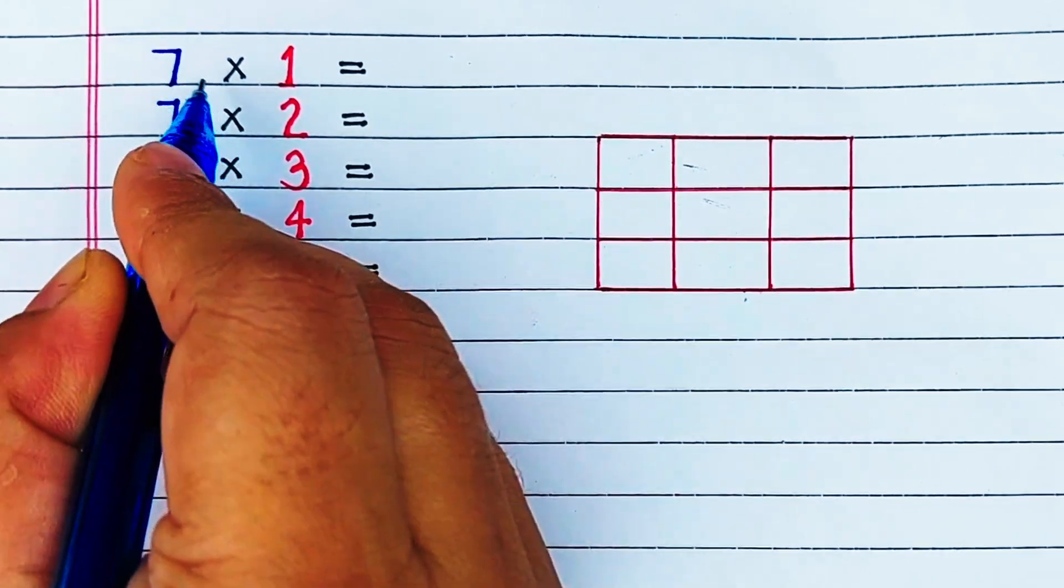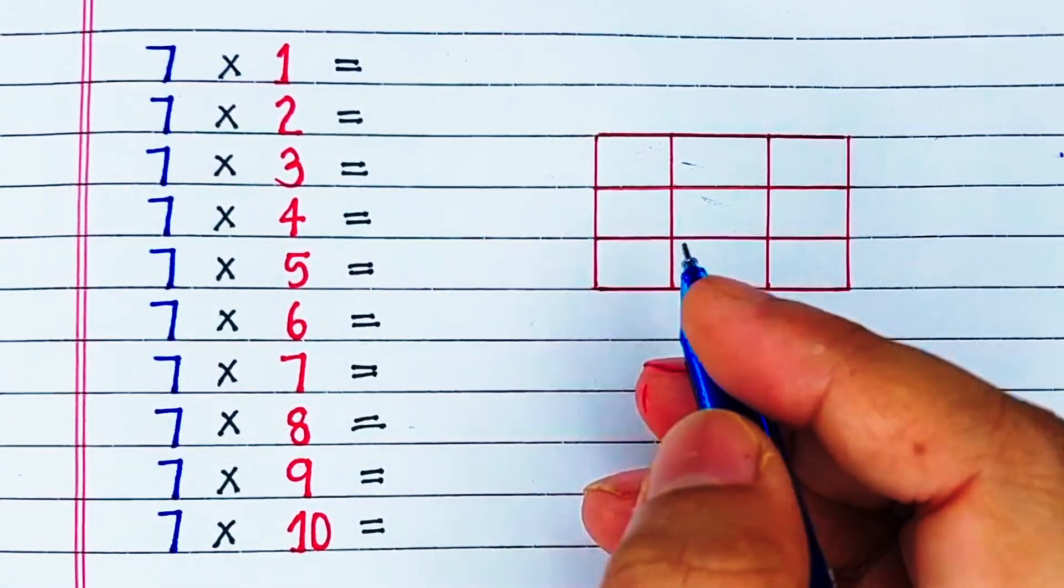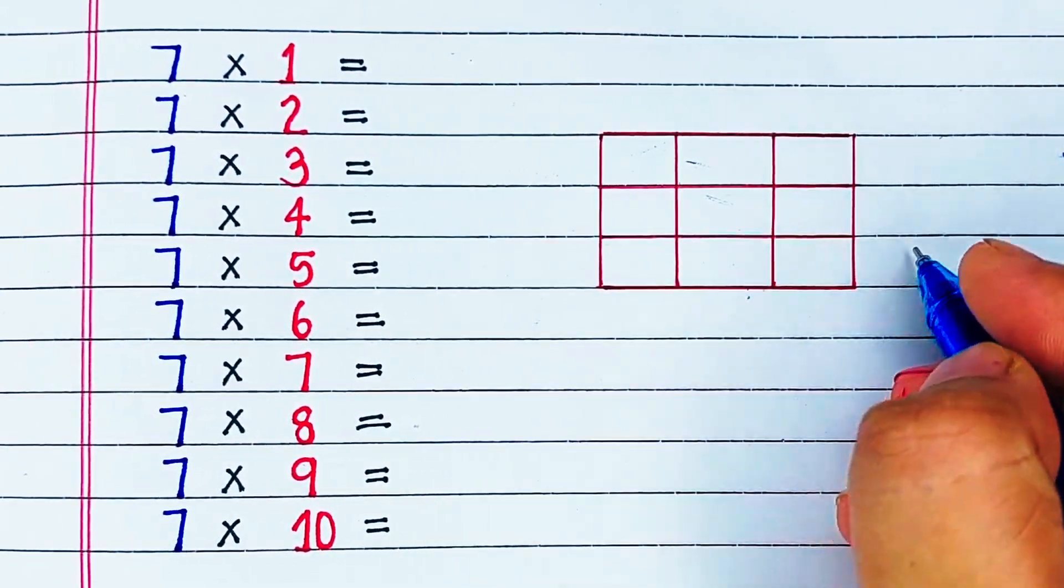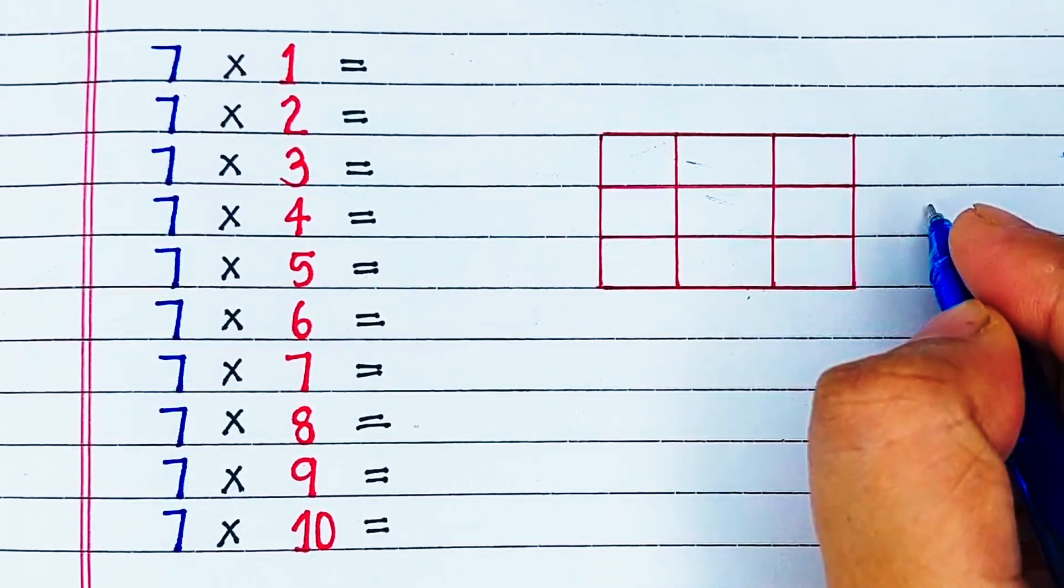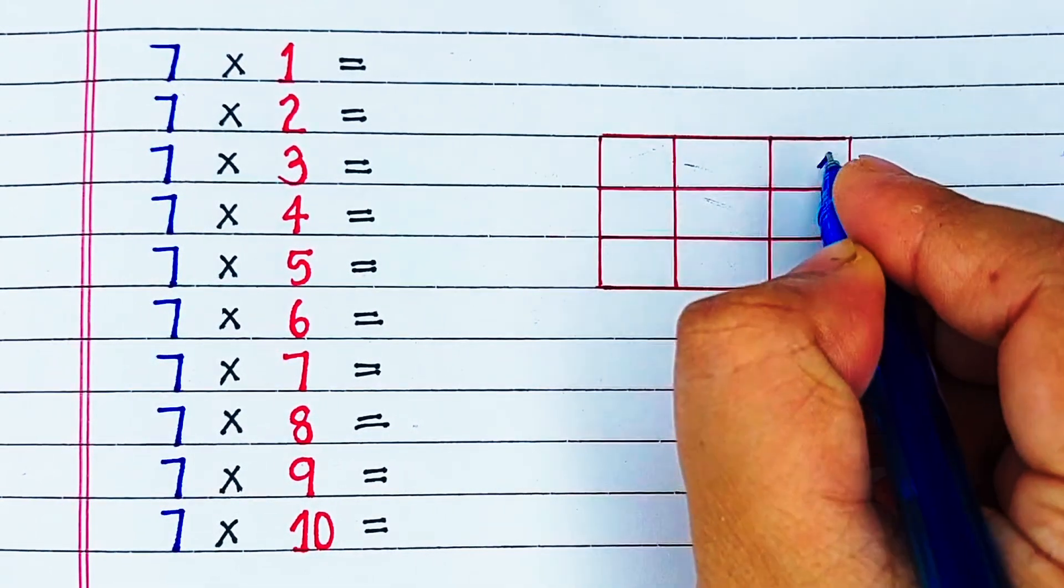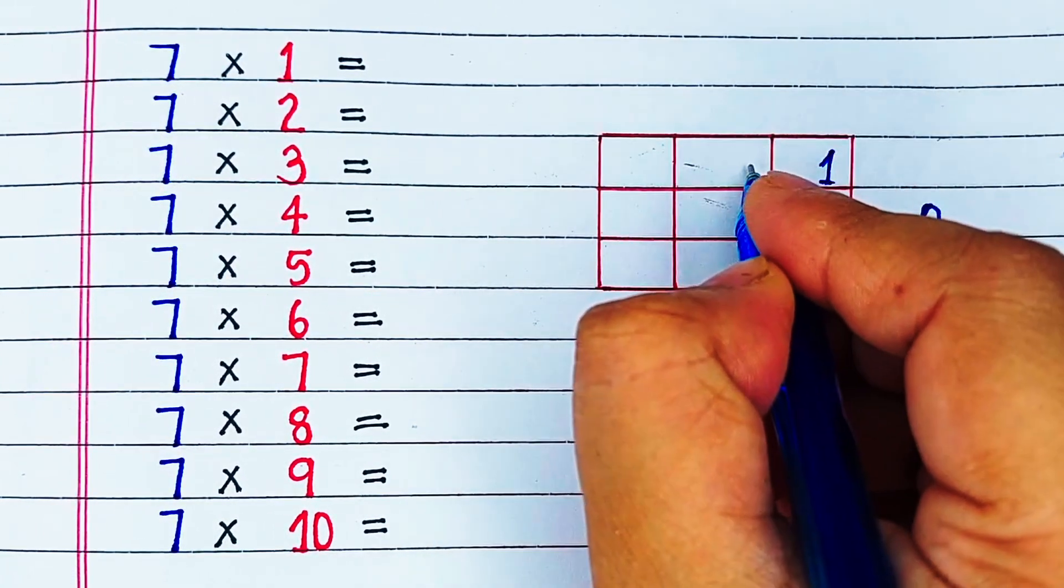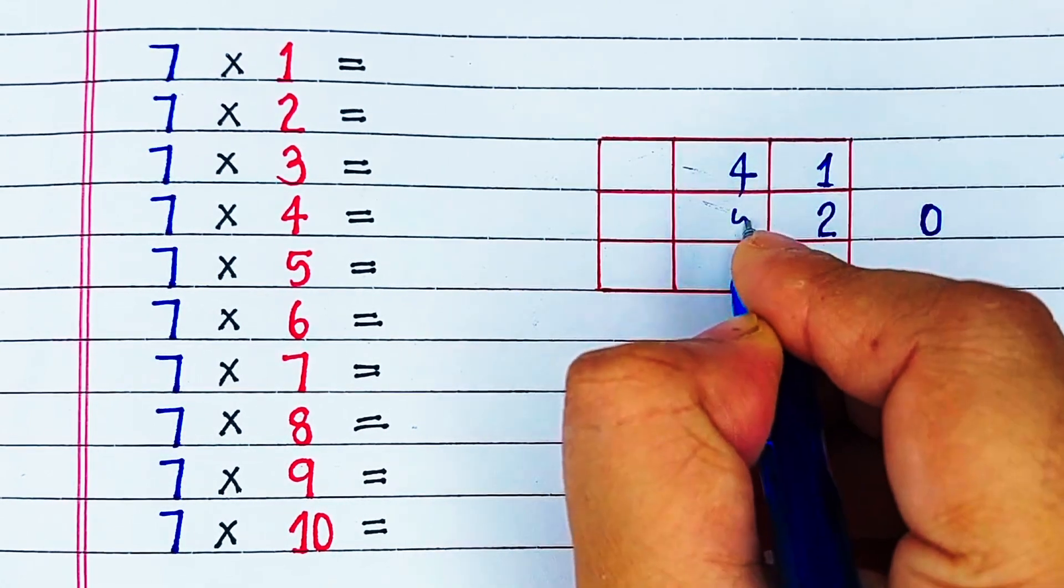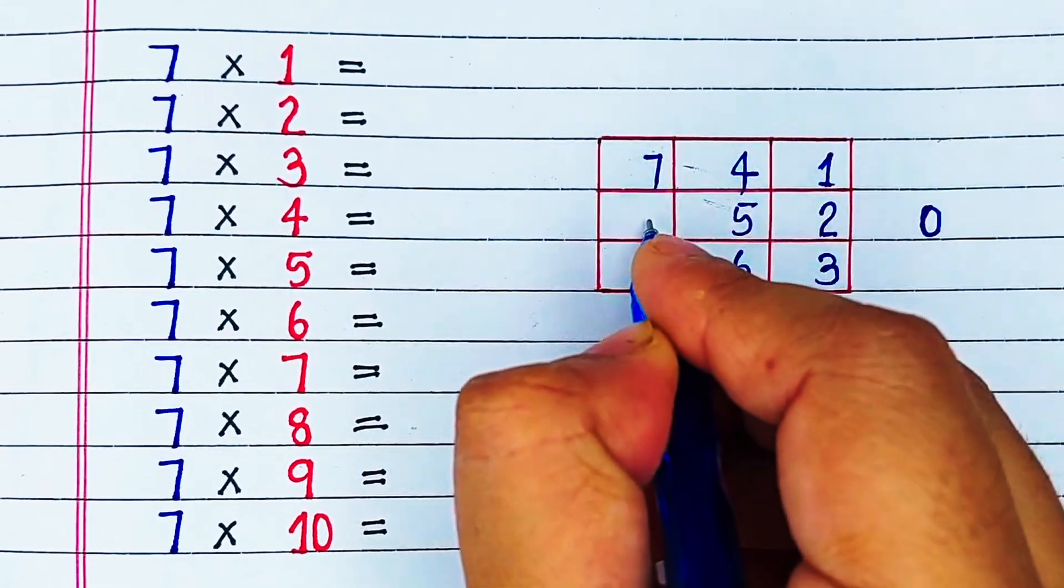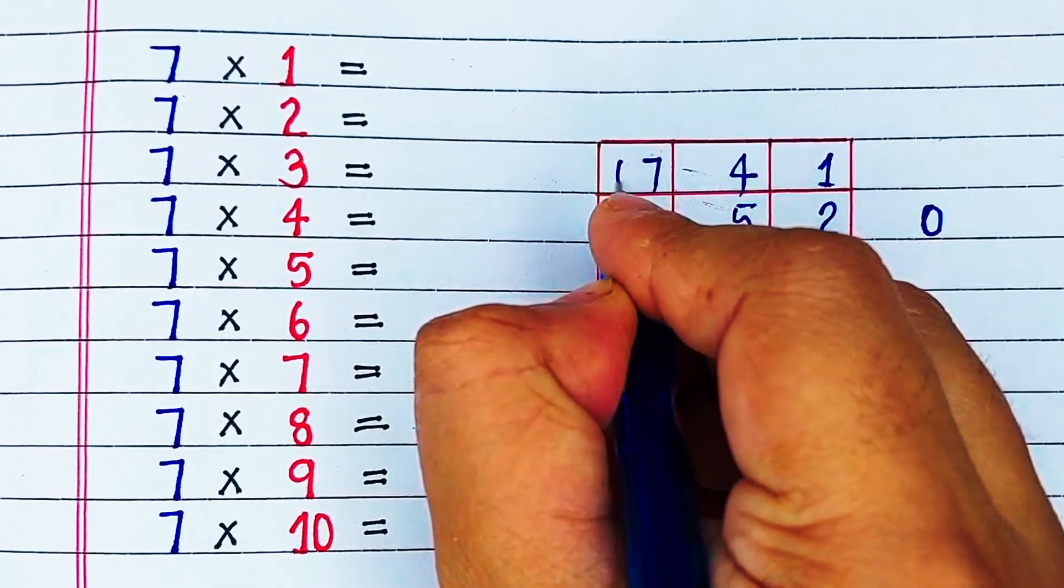Multiplication table of 7 trick. We will start by drawing a 3 by 3 grid with 3 rows and 3 columns. Then we will write a 0 to the right of the grid. We will write 1 to 9 starting from right top most corner in a manner that the least number is at the top row. These were the units digit.